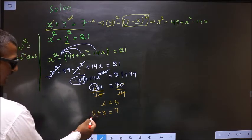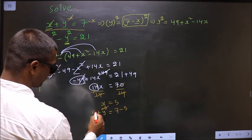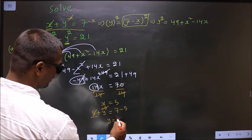So now to get y, I should remove this 5. So subtract 5 on both sides. So I get y equal to 2.